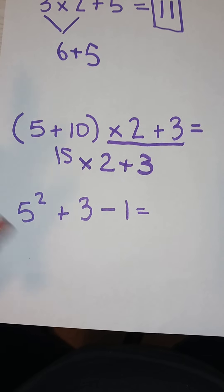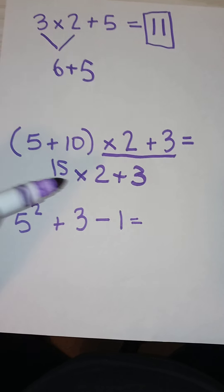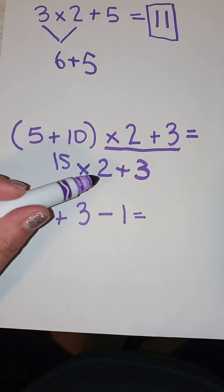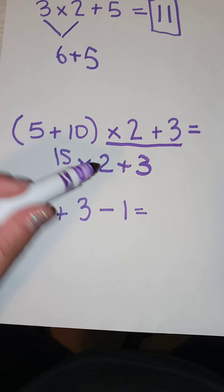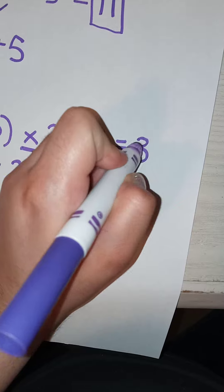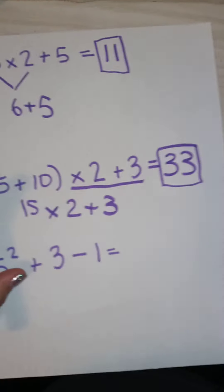What else can we do? Multiplication. Fifteen times two, thirty, plus three, thirty-three. Thirty-three is your answer for problem number two.